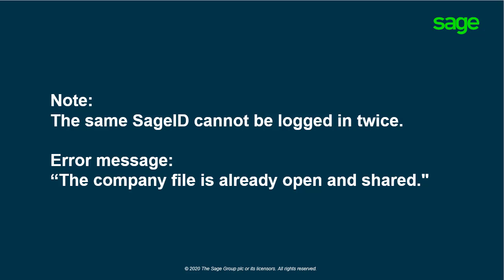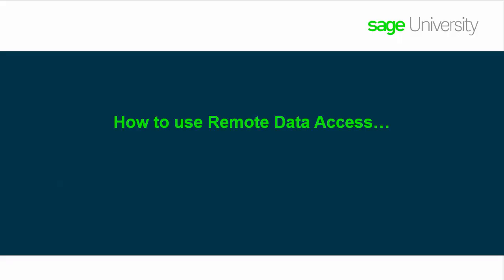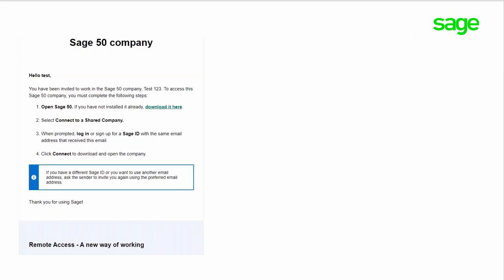If the same SageID attempts to log in twice, you'll get the following error message: 'The company file is already open and shared.' Now, if you've received an invite to use Remote Data Access, here's what you need to know about how to use Remote Data Access. Your journey starts with an email that is automatically generated when the system admin user adds your email address or SageID to their list of users. Here's a sample of the email.